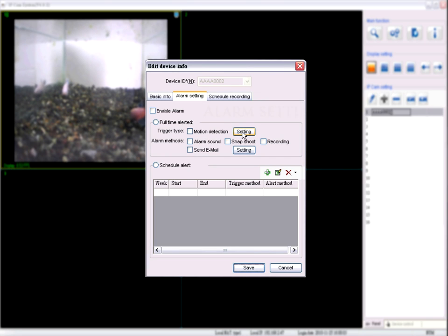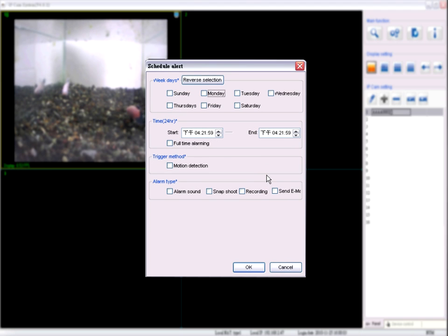Second tab: alarm setting. Enable or disable two types of alarm: full time or schedule alarm. Click the plus sign to set specific days or time to start and turn off the alarm. Alarm condition settings for both types of alarm are the same.